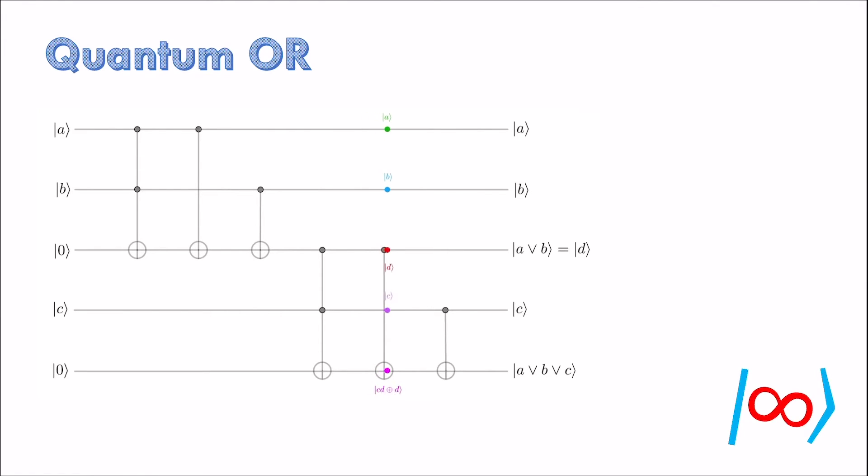Treat the output of OR of 2 qubits A and B as an input along with new qubit C. Use another qubit to store the final output. This circuit uses N-1 additional qubits to store intermediate values. Is it possible to use fewer qubits?